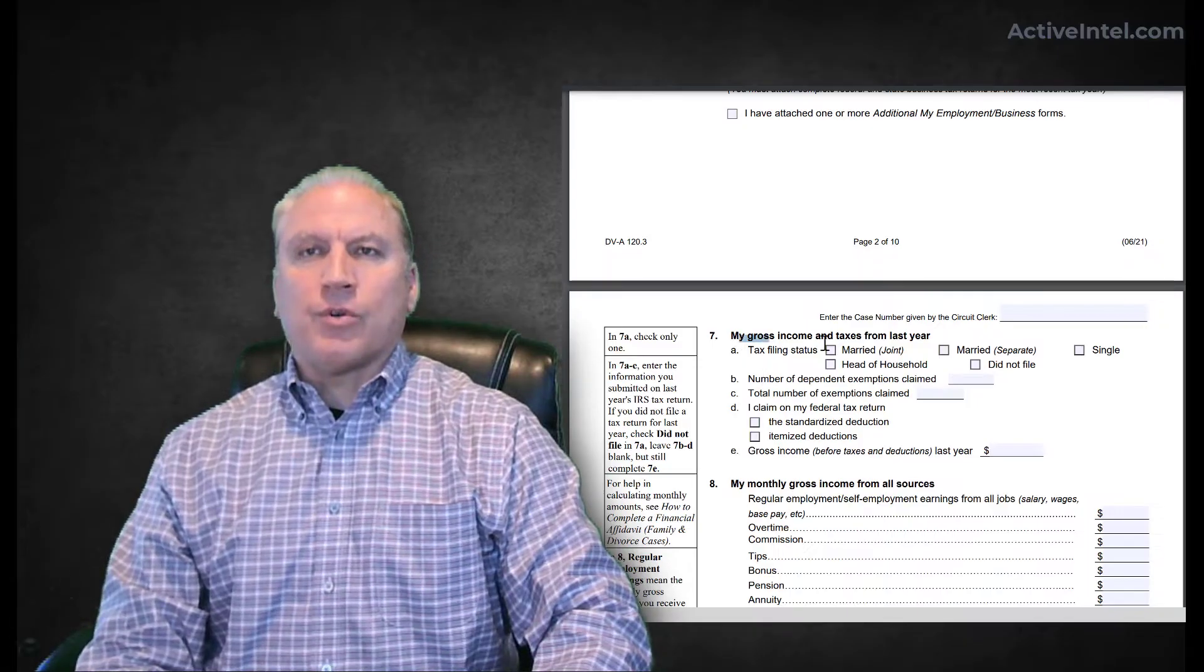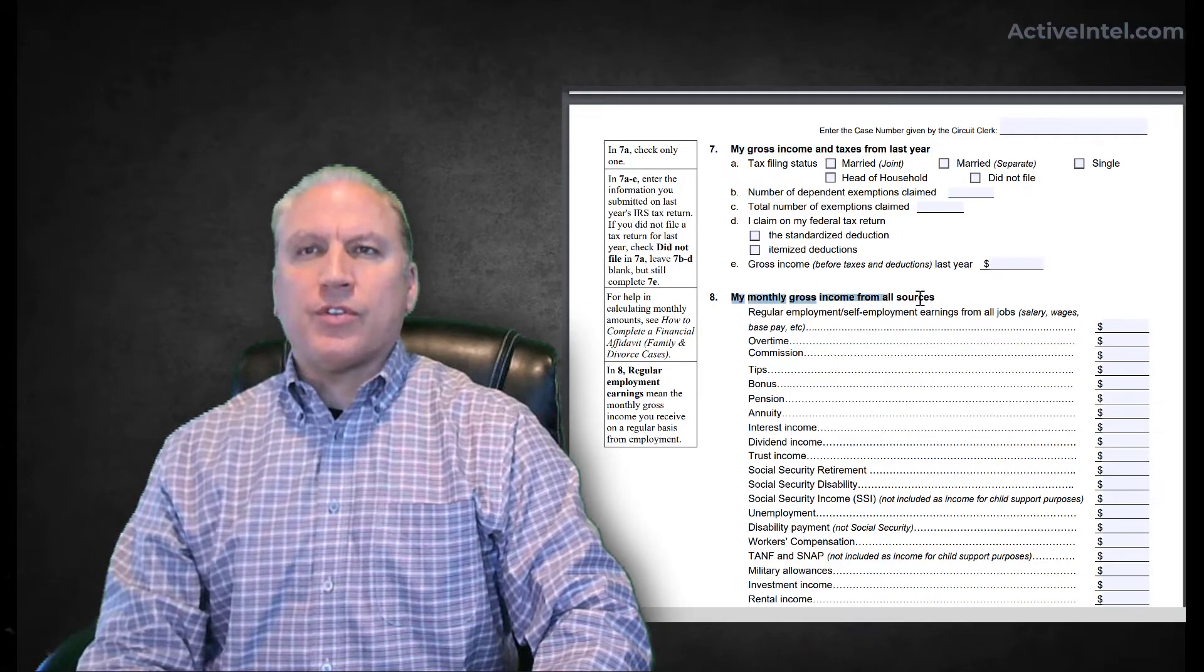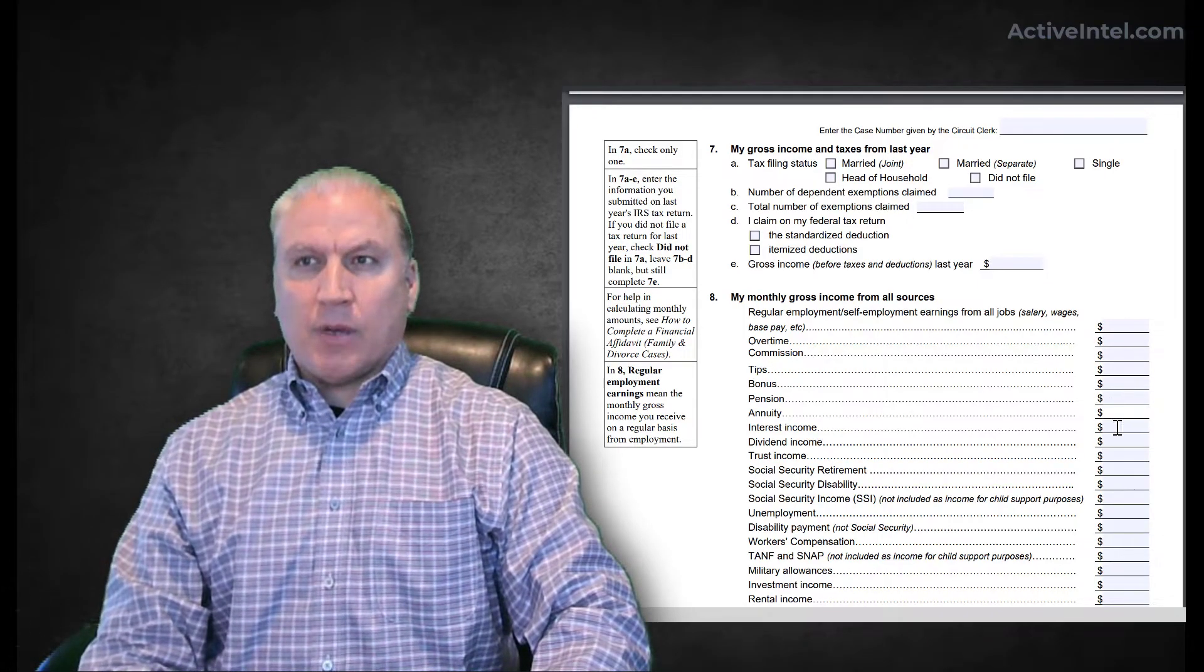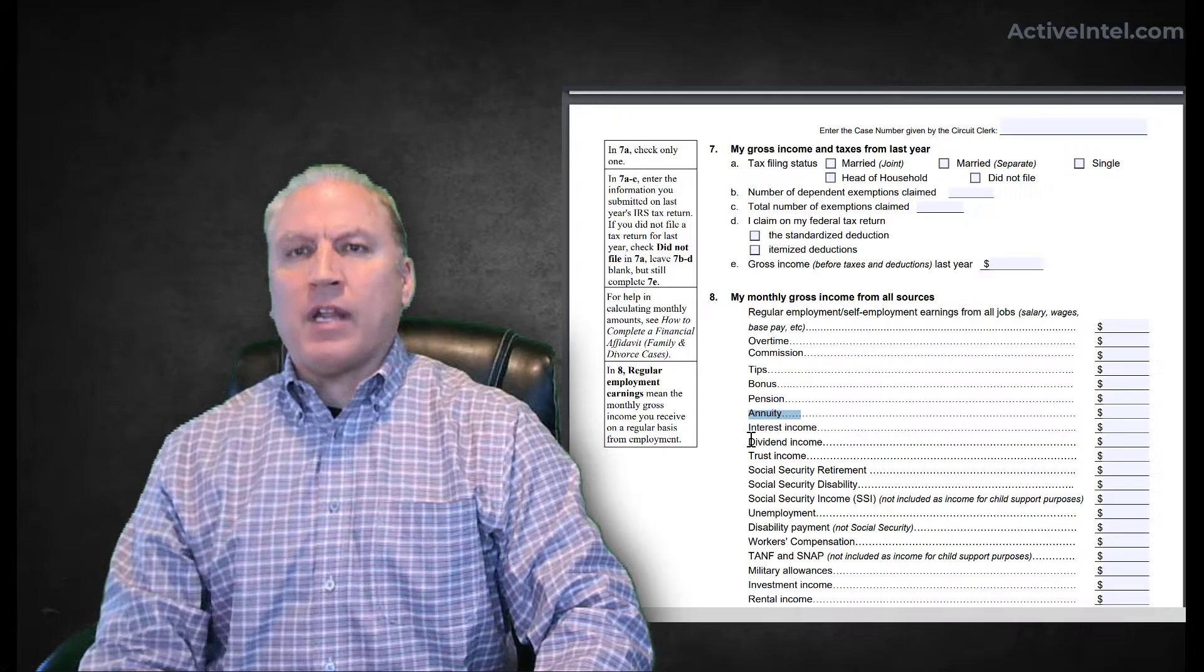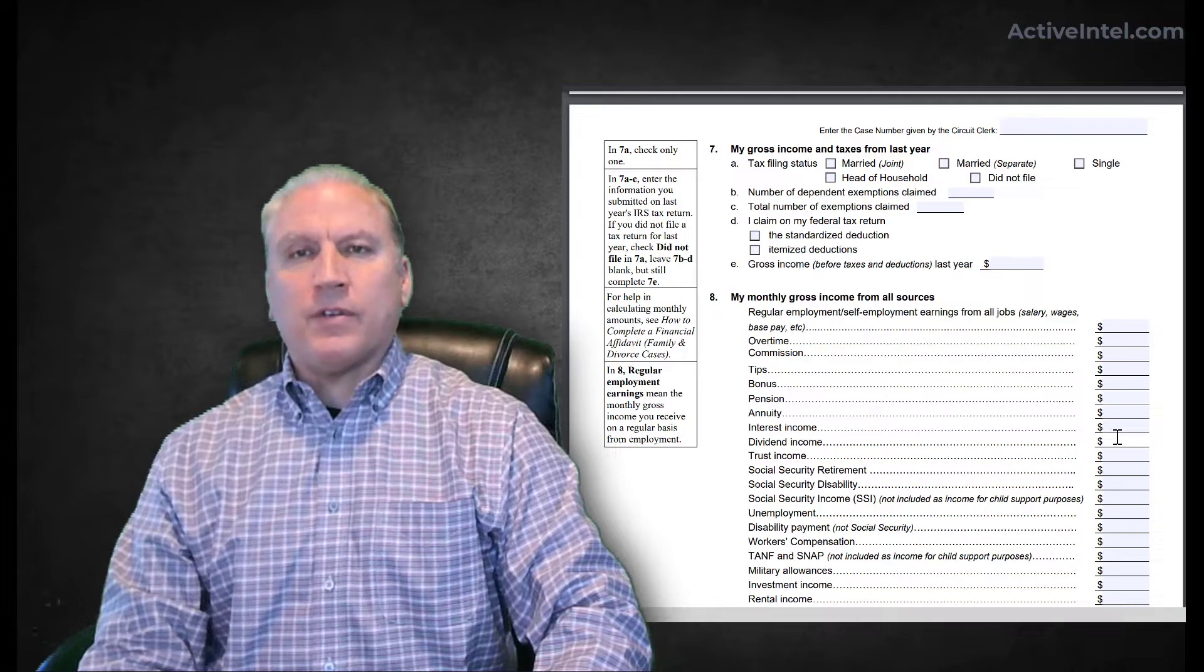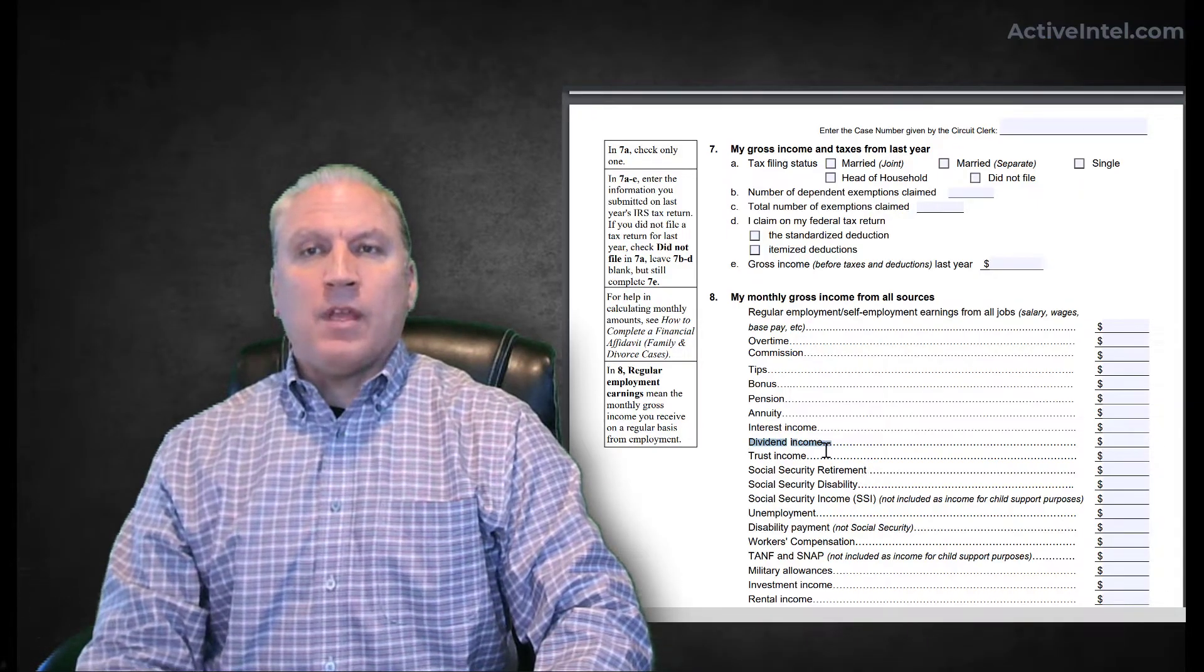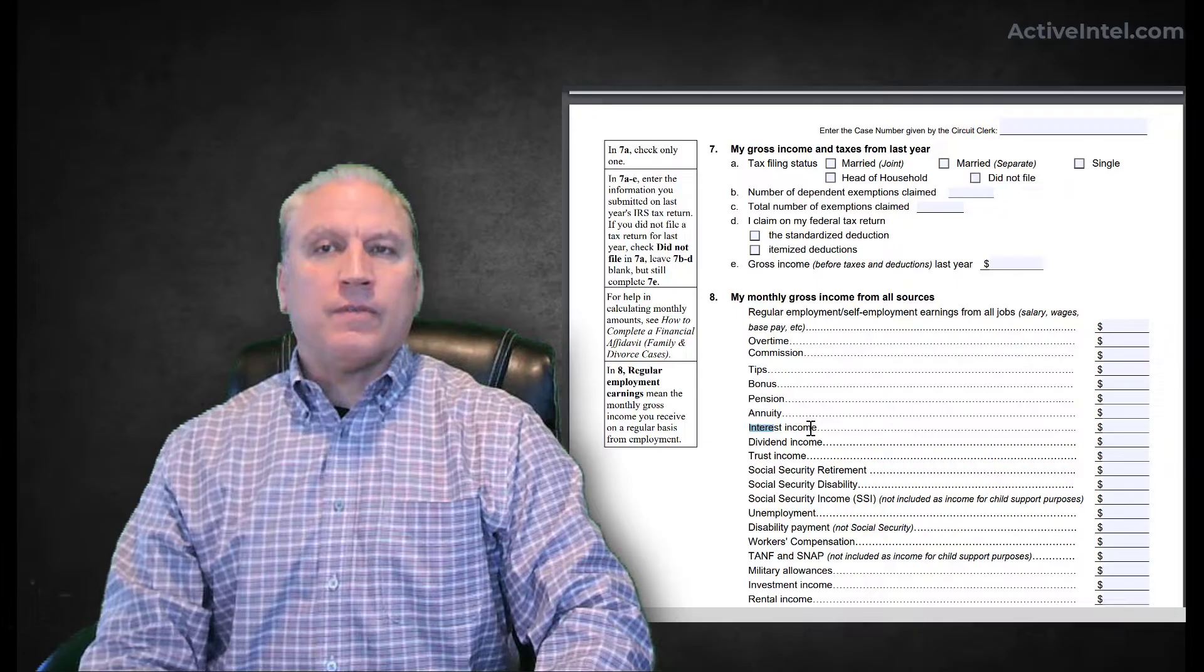Then their income—what's your gross income and taxes? This can be verified with the IRS. Then all your sources of monthly gross income: your regular pay, overtime, tips if you're in the service industry, interest income, dividend income. The reason why this is important to look at is because if somebody puts down annuity or dividend income, then that implies there are stocks or securities owned by the person. If there's not an attachment showing an investment account, then you want to know where did this dividend income come from. If they put down zero but you know they own stocks, well where's the dividend, where's the interest? You match it back and forth both directions.